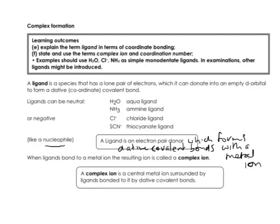Ligands can be neutral. Examples of neutral ligands are water molecules and ammonia molecules. When water is behaving as a ligand, it's known as an aqua ligand, and ammonia, when behaving as a ligand, is called the amine ligand. Ligands can also be negative. Examples of negative ligands are your chloride ion and your thiocyanate ion. The chloride ligand is called chloro, and the thiocyanate ligand is called thiocyano.